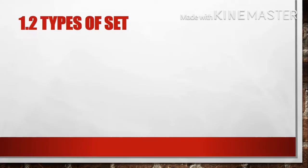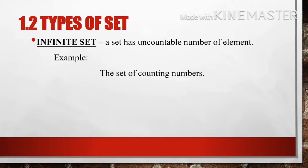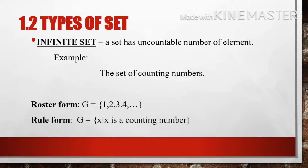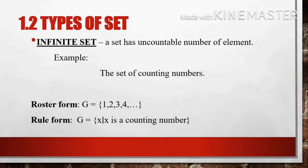The next type of set is the infinite set — a set with an uncountable number of elements. Example: the set of counting numbers. In roster form, set G whose elements are 1, 2, 3, 4, and so on. In rule form, set G = { X | X is a counting number }. We have infinitely many counting numbers starting from 1, so it is considered an infinite set.